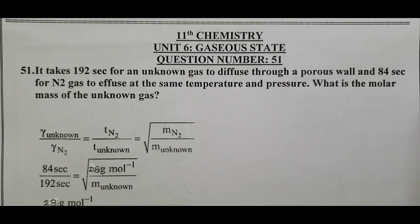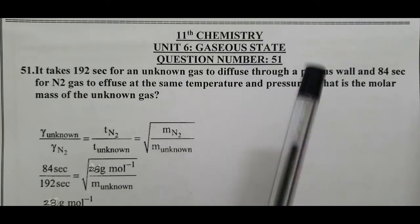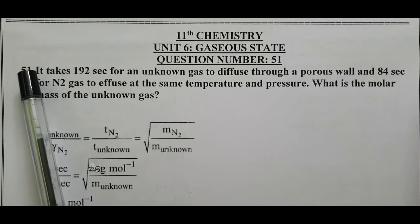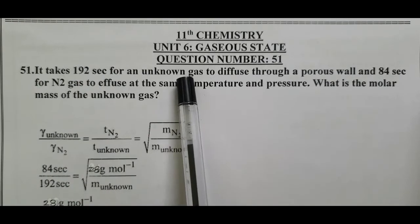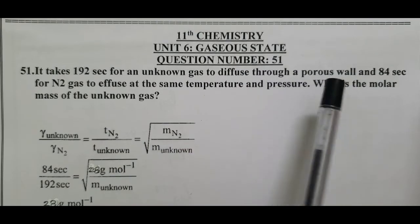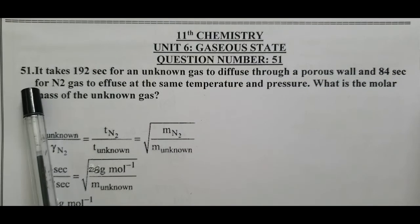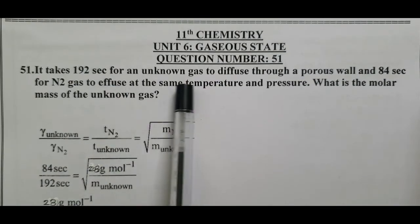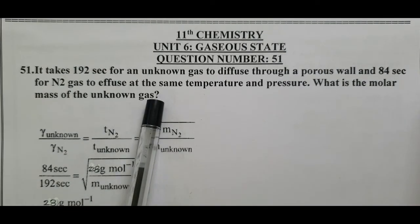Peace be upon you. 11th chemistry, unit 6, gaseous state, question number 51. It takes 192 seconds for an unknown gas to diffuse through a porous wall and 84 seconds for N2 gas to diffuse at the same temperature and pressure. What is the molar mass of the unknown gas?